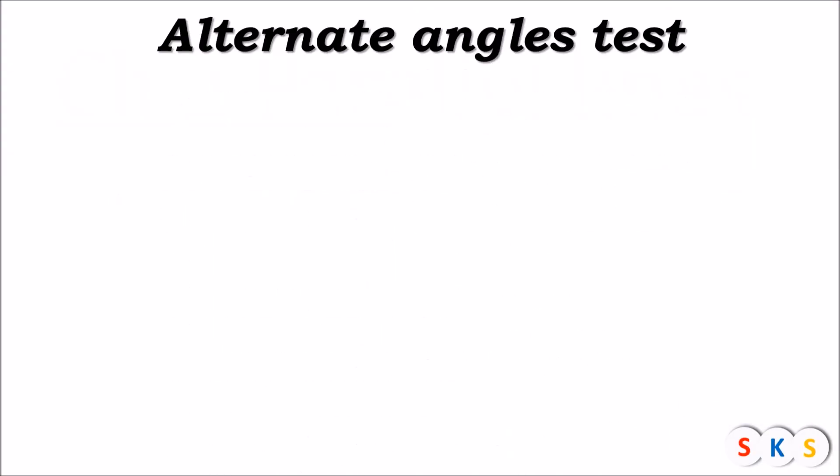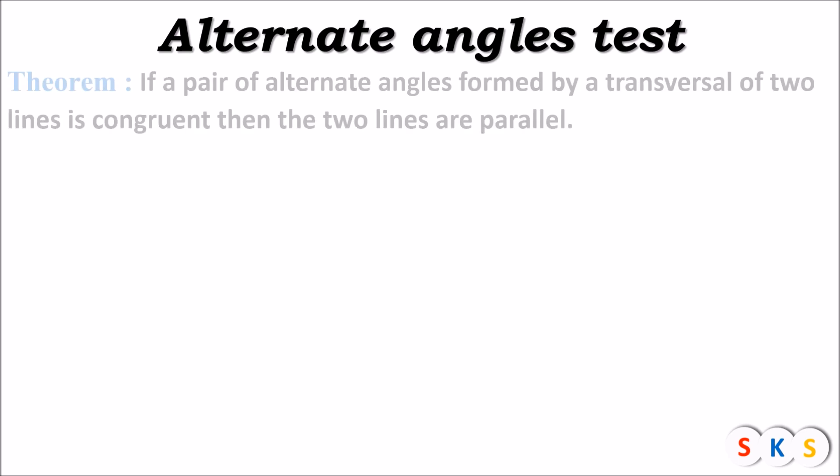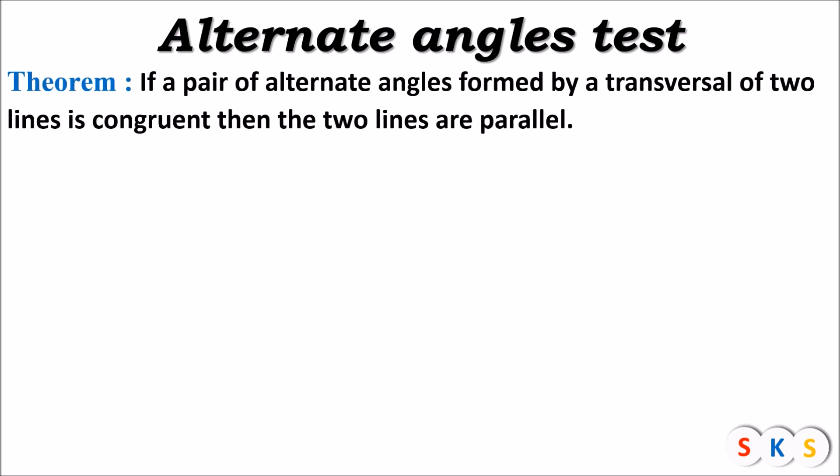Alternate angles test — let's see the statement of this theorem. If a pair of alternate angles formed by a transversal of two lines is congruent, then the two lines are parallel. So what is given in this statement? We know that the pair of alternate angles are congruent.